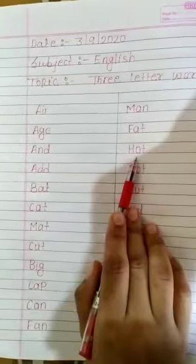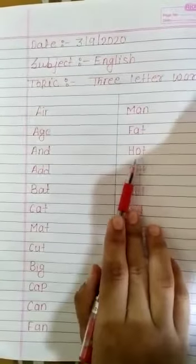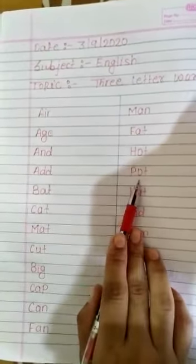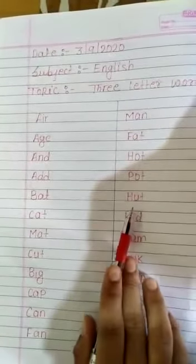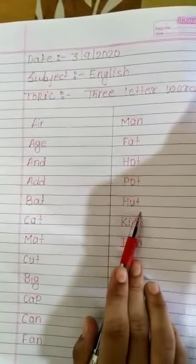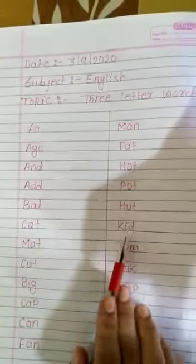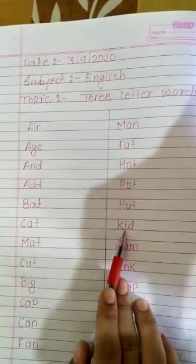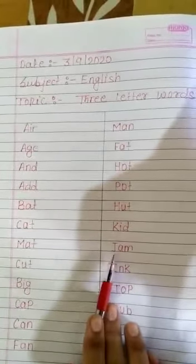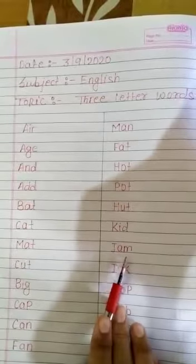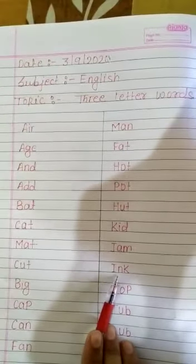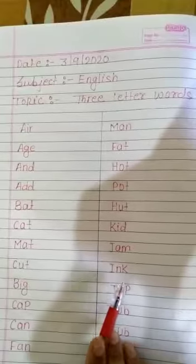H, O, T. हॉट. P, O, T. पॉट. H, U, T. हट. K, I, T. किट. J, A, M. जैम. I, N, K. इंक.